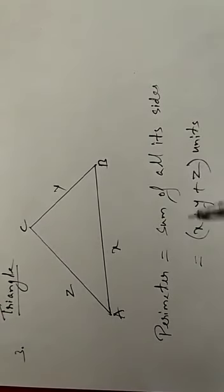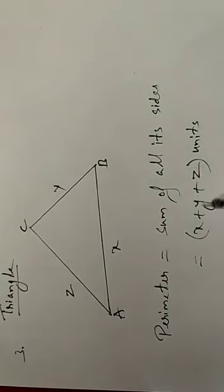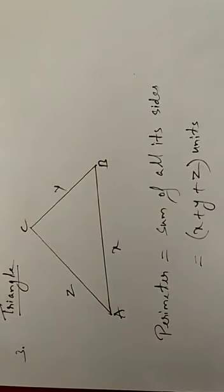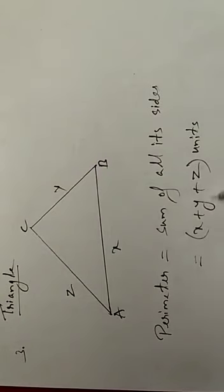So we can say the perimeter of a triangle is equal to the sum of all its sides.